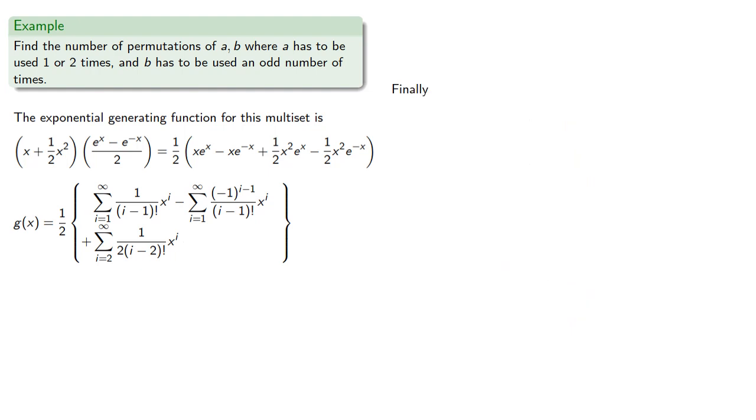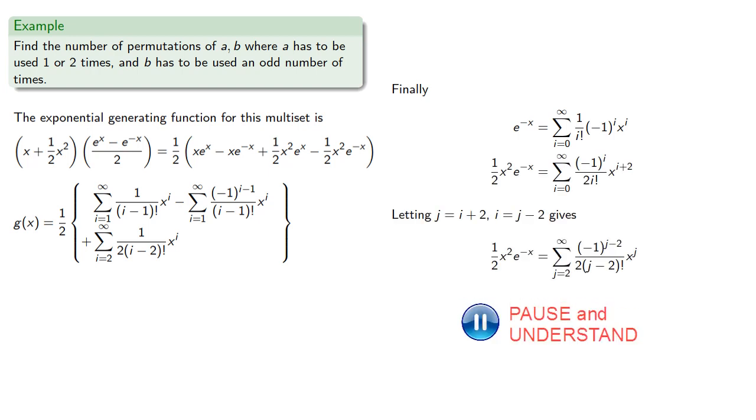One-half x squared e to the negative x will be given by its series, and let's make one simplification. Negative 1 to the power j minus 2 is really the same as negative 1 to the j, and negative 1 squared is just 1, so this simplifies.